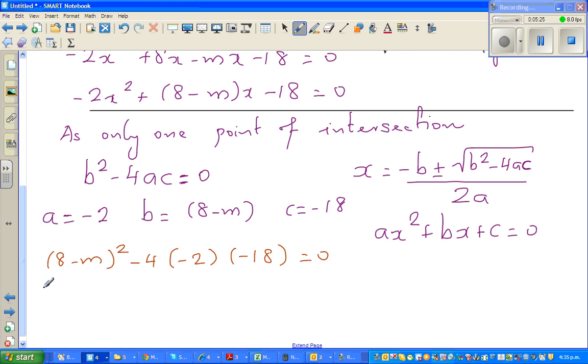Let me change color. So this is 8 minus m squared minus 4 times a is minus 2, c is minus 18 is equal to 0. So this is 8 minus m times 8 minus m. If you know how to expand directly there is a very neat formula but I will not go into that.